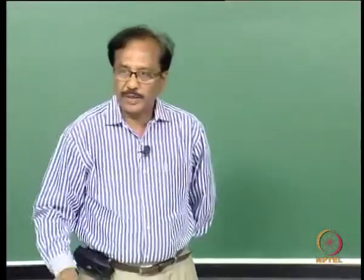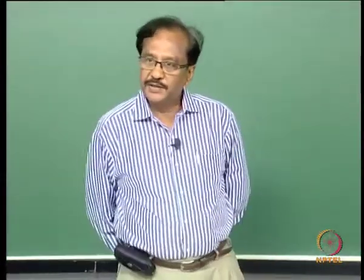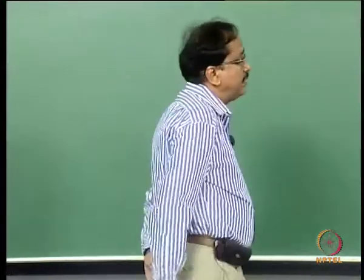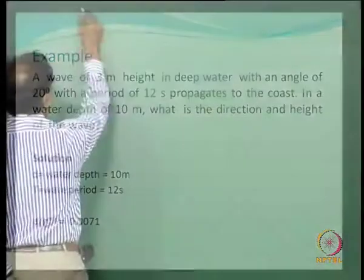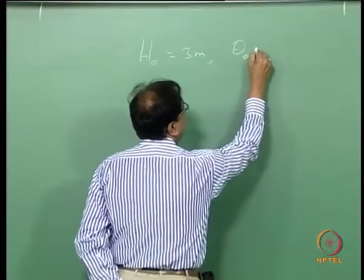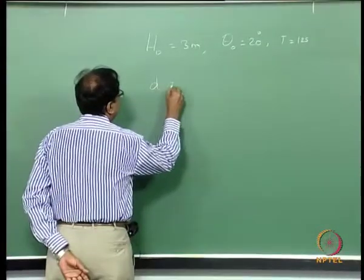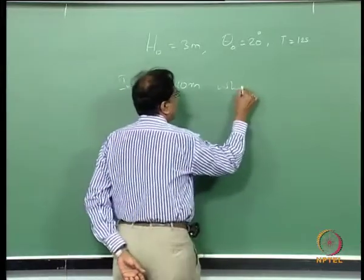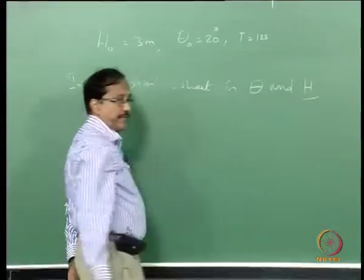That is what I am trying to explain in this class, after which we will see some problems related to wave reflection. Now the problem is: a wave of 3 meters height in deep water with an angle of 20 degrees and a wave period of 12 seconds propagates to the coast. In a water depth of 10 meters, what is the direction and height of the wave? You are given H₀ = 3 m, θ₀ = 20°, and T = 12 seconds. You need to find θ and wave height at 10 meters.